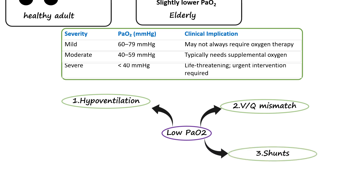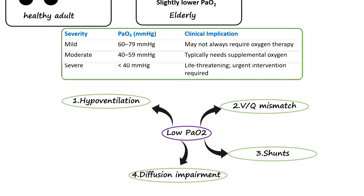The third category consists of shunting, where blood bypasses the lungs entirely without being oxygenated, occurring in conditions like atelectasis, ARDS, or congenital heart defects. The fourth group includes diffusion impairment, where oxygen transfer across the alveolar membrane is hindered, typically caused by interstitial lung diseases like pulmonary fibrosis. Finally, the fifth category involves low inspired oxygen levels, which can happen at high altitudes or in cases of oxygen deprivation.